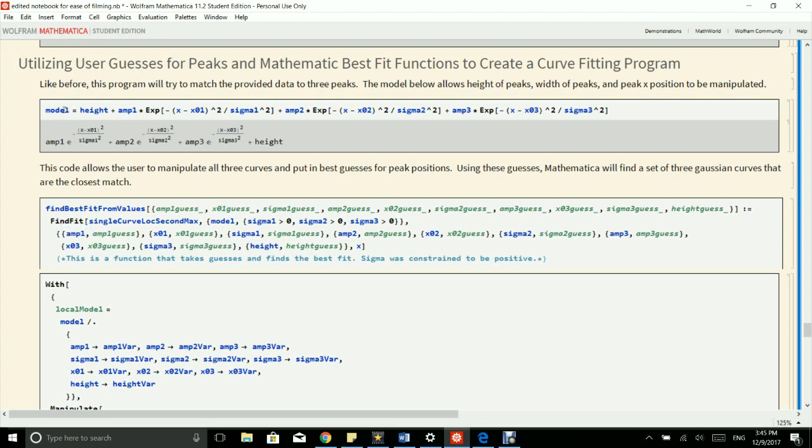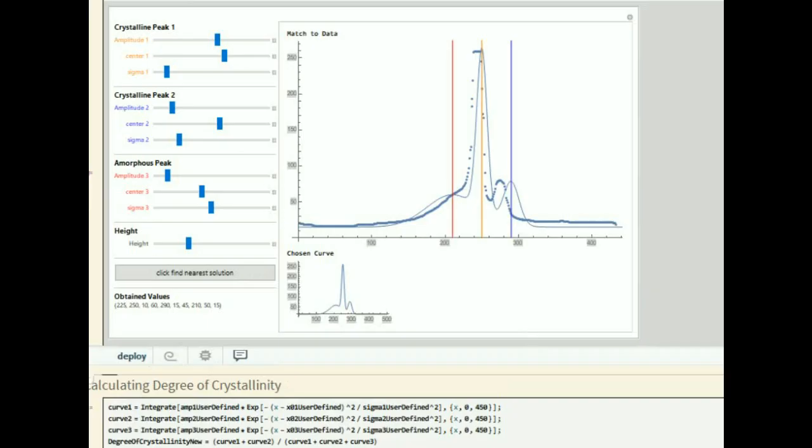So this model is a model that includes three different Gaussian peaks. So the full code is available to you in my notebook, but here's the final product. Like in the previous curve fitting program I showed you, you're able to adjust the positions and shapes of the crystalline peaks and the amorphous peaks as follows.